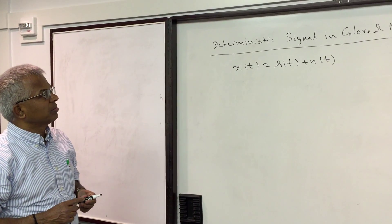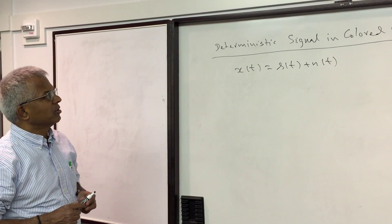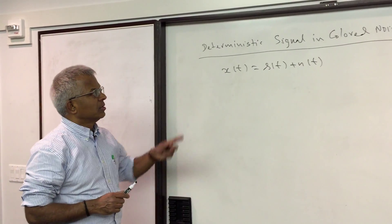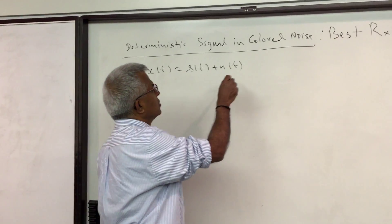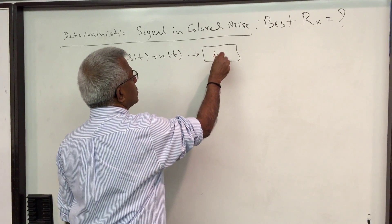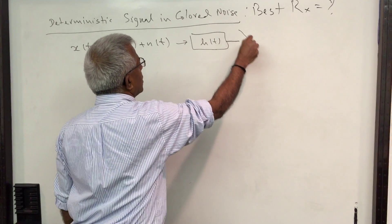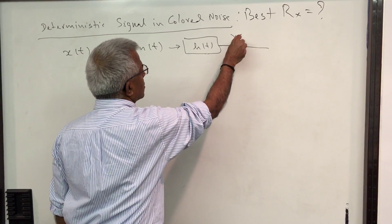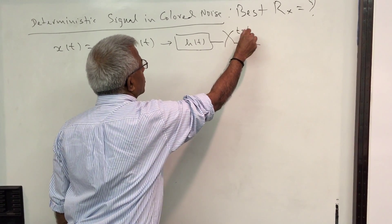So we look at this problem which is you have a deterministic signal buried in colored noise and you want to pass it through a filter. The assumption is that at some time instant we are going to make the decision.